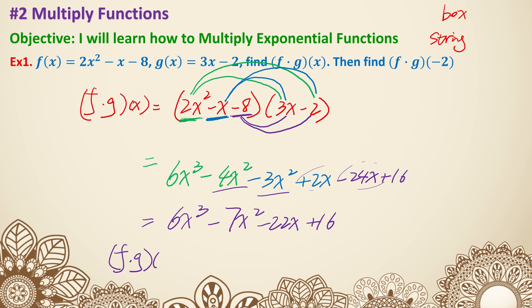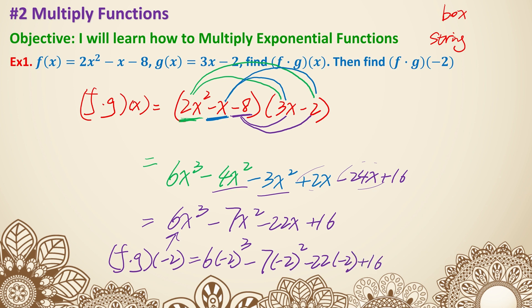f times g of negative 2 — for this one, I'm going to plug into the final answer. 6 times negative 2 cubed, minus 7 times negative 2 squared, minus 22 times negative 2, plus 16. So the first one is negative 8 times 6, which is negative 48. Then 4 times 7 is minus 28. Negative 2 times negative 22 is plus 44, and plus 16. These combine to give negative 16. That's example 1.